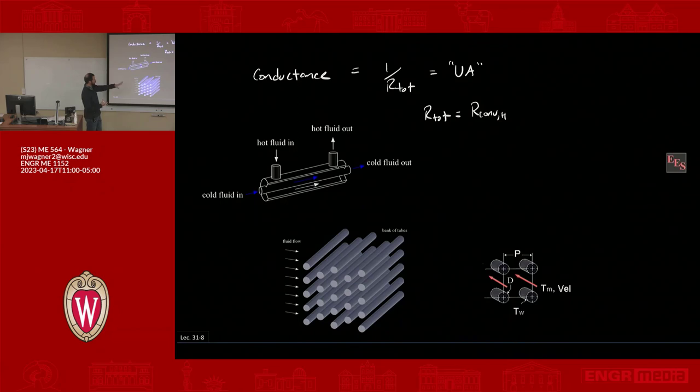Then we have conduction resistance through the wall. We have fouling resistance on the cold side and then we have convection on the cold side as well.